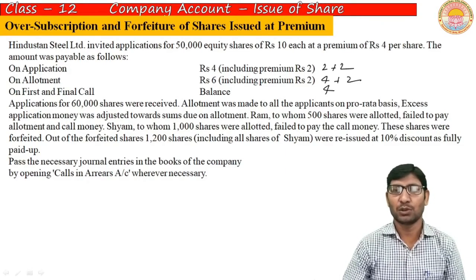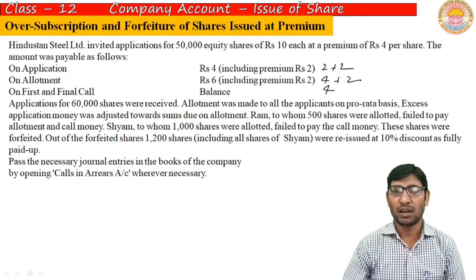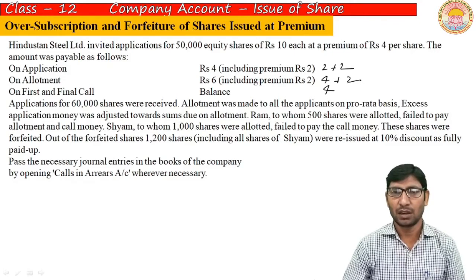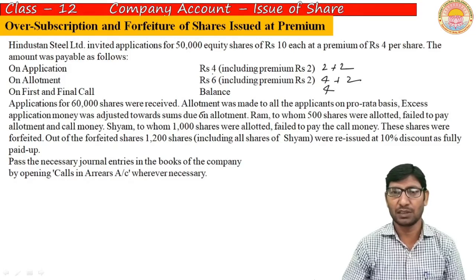Allotment was made to all applicants on pro-rata basis. Excess application money was adjusted towards allotment. Ram, to whom 500 shares were allotted, failed to pay the allotment and call money. So we need to find Ram's applied shares.